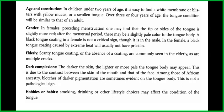Elderly: scanty tongue coating or the absence of a coating are commonly seen in the elderly, as are multiple cracks. For dark complexions, the darker the skin, the lighter or more pale the tongue body may appear, due to the contrast between the skin of the mouth and that of the face. Among those of African ancestry, blotches of darker pigmentation are sometimes evident on the tongue body — this is not a pathological sign. For hobbies or habits, smoking, drinking, or other lifestyle choices may affect the condition of the tongue.